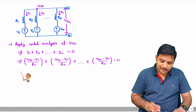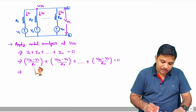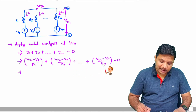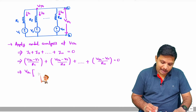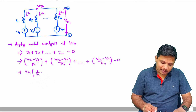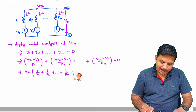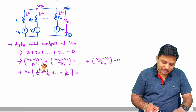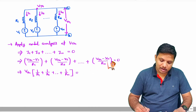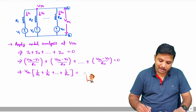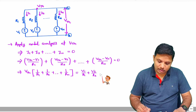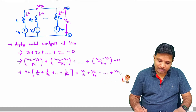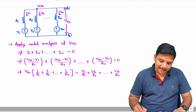Now, if you want to simplify this, you see that if you take Vth/R1, Vth/R2, Vth/Rn to one side, then Vth will be common, and you will have 1/R1 plus 1/R2 plus up to 1/Rn on that side. And minus V1/R1 minus V2/R2 minus Vn/Rn on the other side gives V1/R1 plus V2/R2 plus up to Vn/Rn.